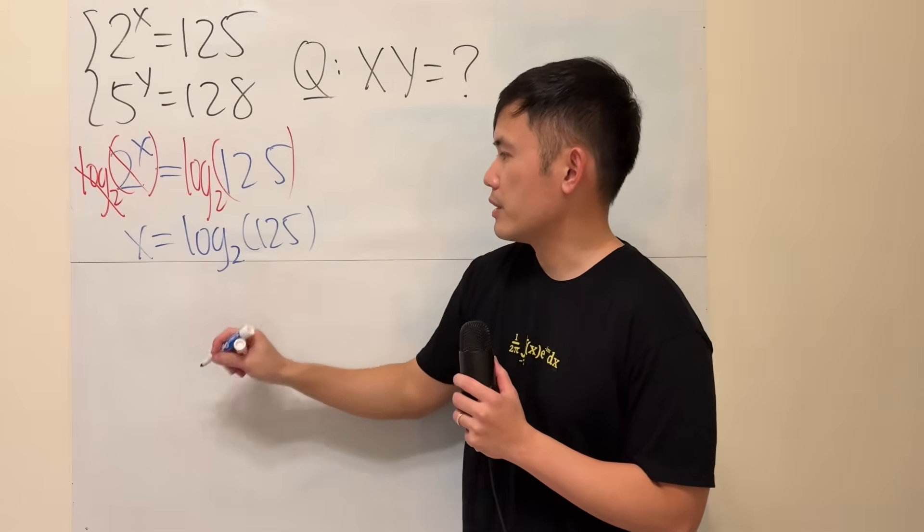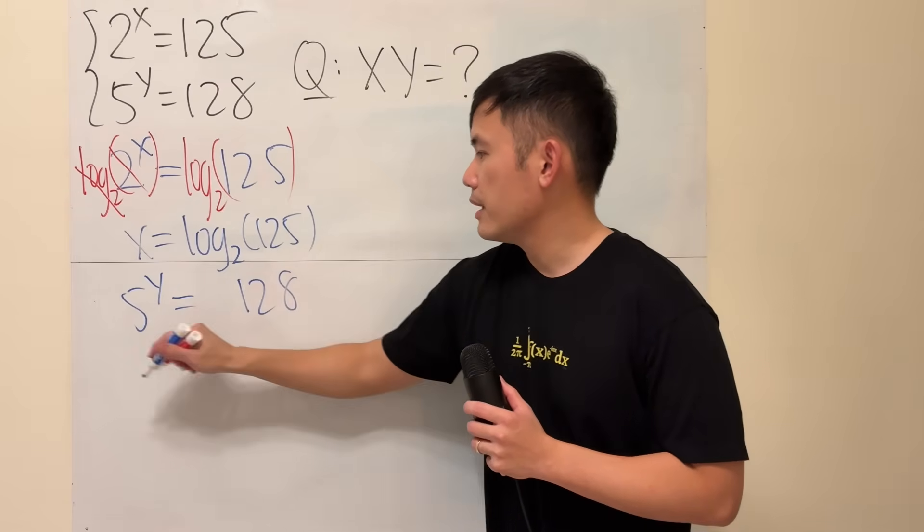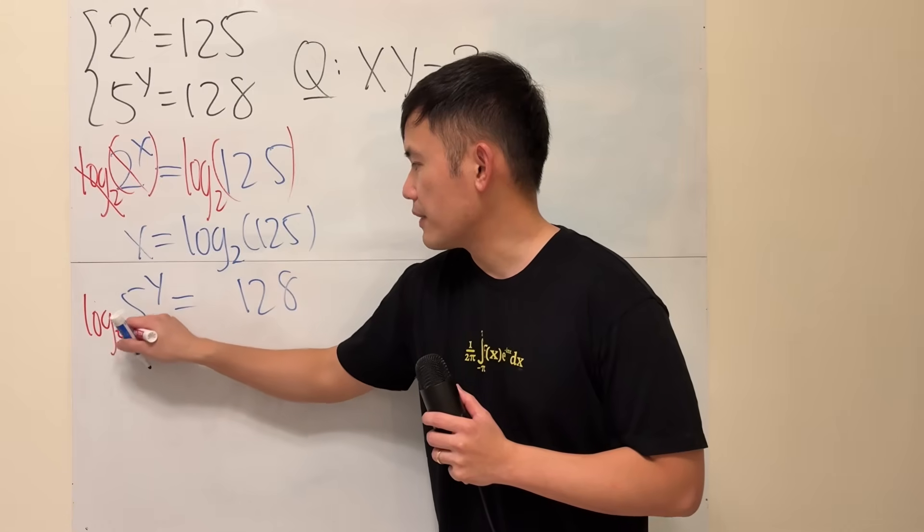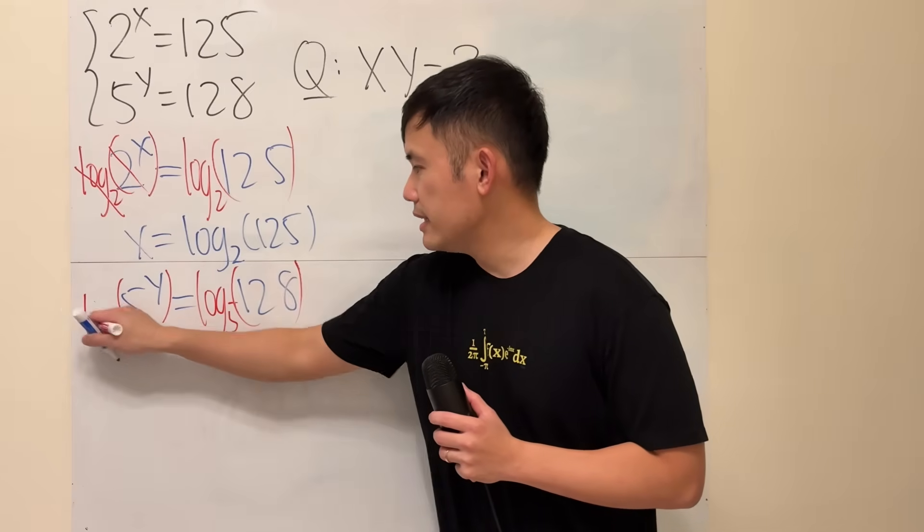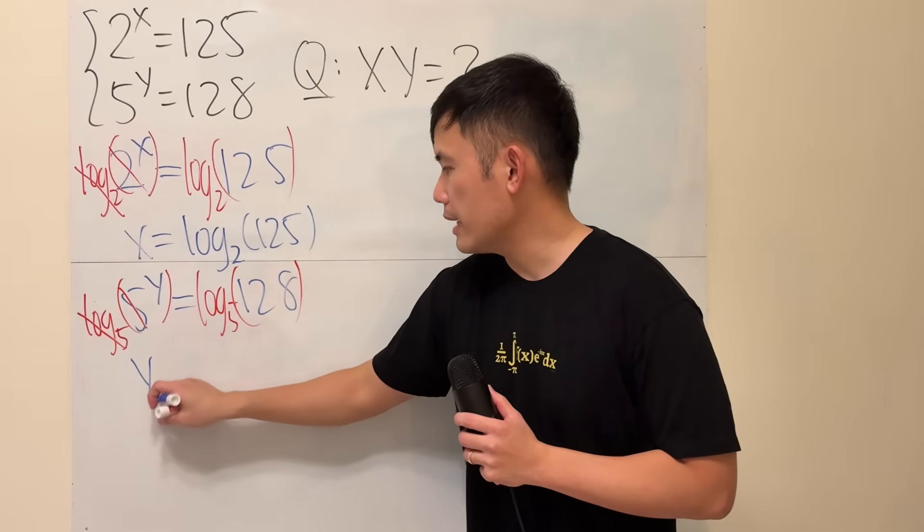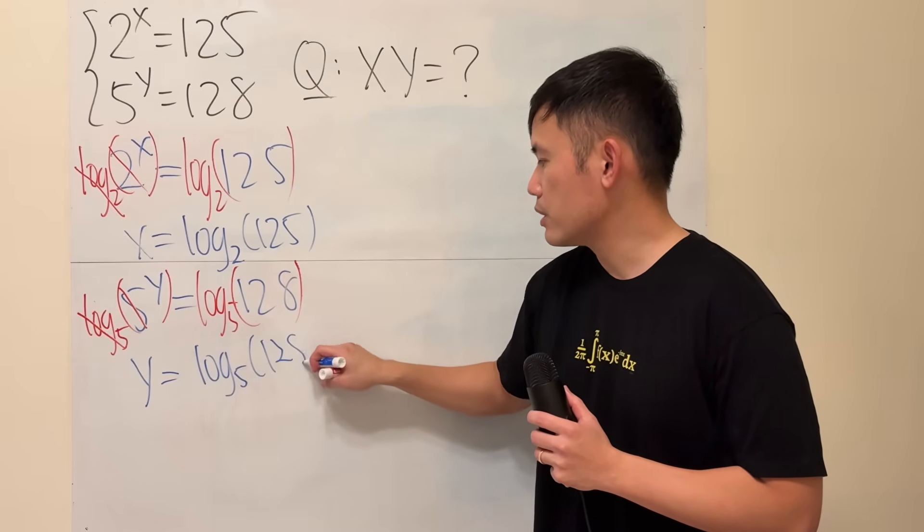Similarly, let's do the same thing right here. 5 to the y equals 128, and just take log base 5 to both sides. So that this and that can cancel, and we get y being log base 5 of 128.